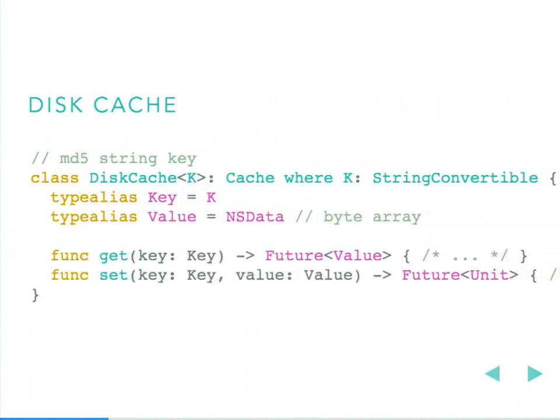For disk, we're generic on some K where K must be stringable in some way, then we can MD5 that string and use it as a file name. Inside the file we store bytes. So we bind our key to K and our value to NSData — which on iOS is just a bunch of bytes. Get reads the file, set writes to the file. Now we have two caches, but we want one thing we can request some key from and get back a value — so we want to stick them together.